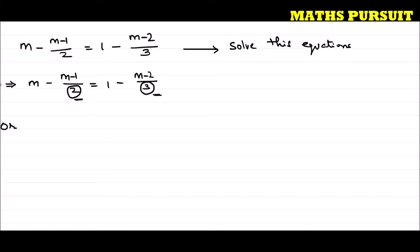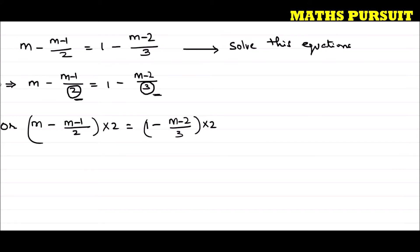I will multiply both sides of the equation by 2. So: m minus (m minus 1) divided by 2, multiplied by 2, is equal to 1 minus (m minus 2) divided by 3, multiplied by 2. I have multiplied 2 to both sides. My plan is to remove the 2 from the denominator first, and subsequently I will also multiply by 3 to remove the 3 from the right-hand side.